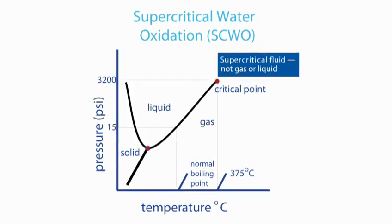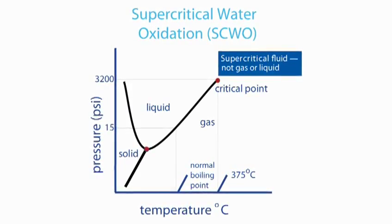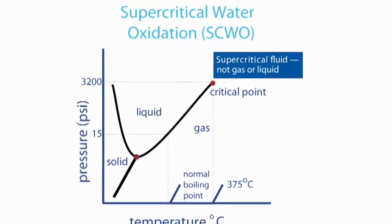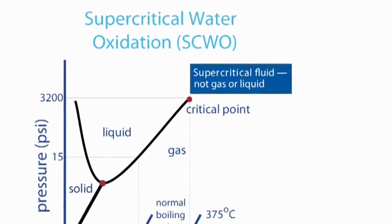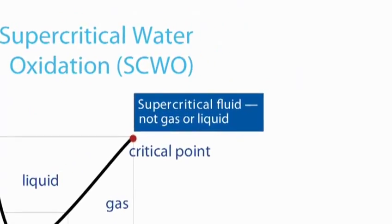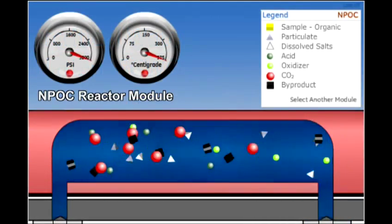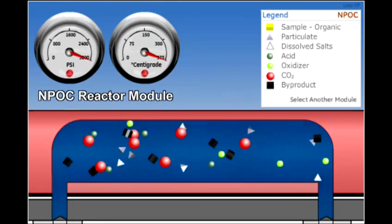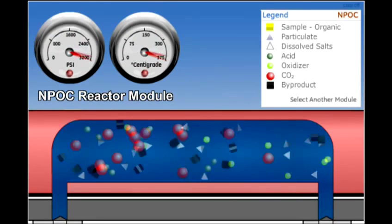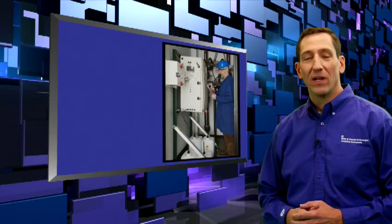By raising the temperature and pressure, the Innovox converts aqueous samples to a supercritical water phase. That lets the Innovox handle a wide variety of sample matrices. After each analysis, the Innovox removes troublesome particulate residues and oxidation byproducts from the sample flow path.